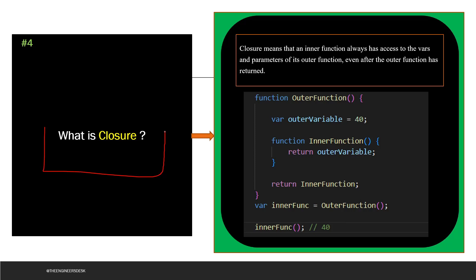The next question says: what is closure in JavaScript? Closure means that an inner function always has access to the variables and parameters of its outer function, even after the outer function has finished execution or has returned. Let's see the example. This is your outer function. Inside this outer function, we are declaring one variable having value 40, and then we are declaring one inner function. And then we are returning this variable inside this inner function. Since you have declared this outer function, you need to return the inner function. So I'm returning the inner function here. Now I'm declaring a variable and calling the outer function. So outer function is going to return variable 40, because we have used that inside the inner function. This is what closure means — you will still be able to access the variable by calling this inner function. So if you call this inner function you will get 40.